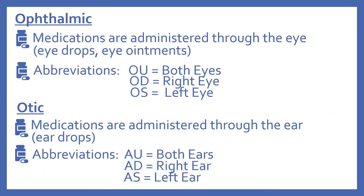Next is the ophthalmic route of administration. These medications are administered through the eye and include eye drops and eye ointments. Some abbreviations for the ophthalmic route: OU means both eyes, OD means right eye, and OS means left eye.